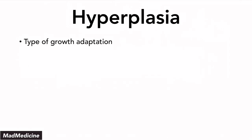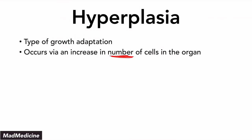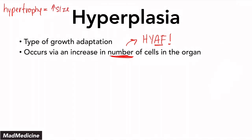Hyperplasia is also a type of growth adaptation. What happens in hyperplasia is that you end up having an increase in the number of cells. This is very high yield. Both of these concepts — size and number of cells — are high yield. So to break it down: hypertrophy increases the size of the cells, and hyperplasia increases the number of cells. Commit that to your memory because it is a huge distinguishing factor.